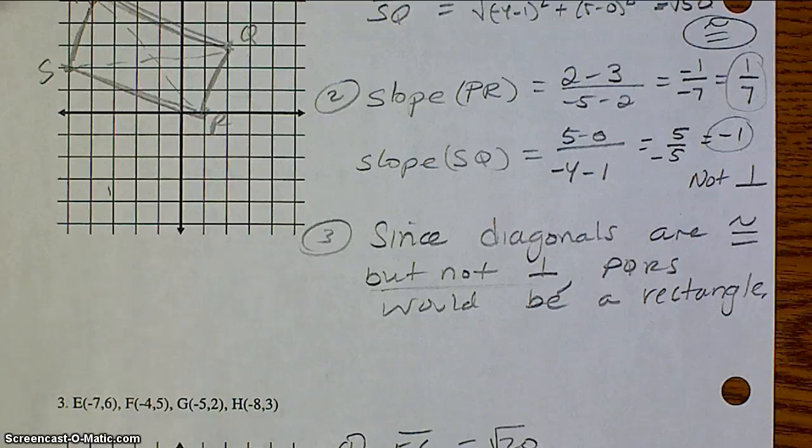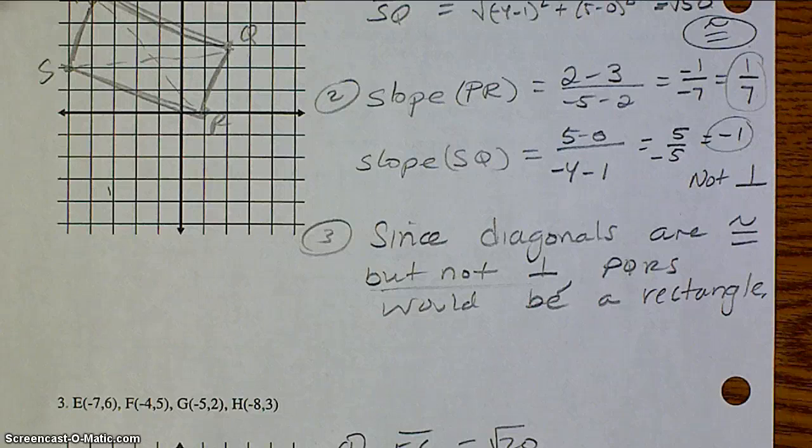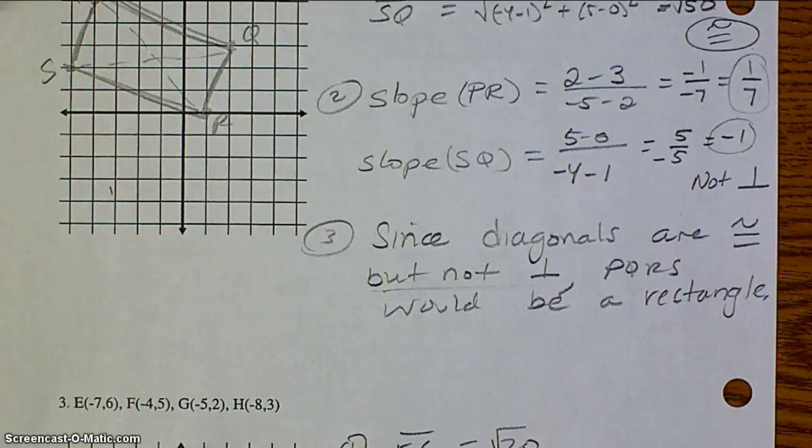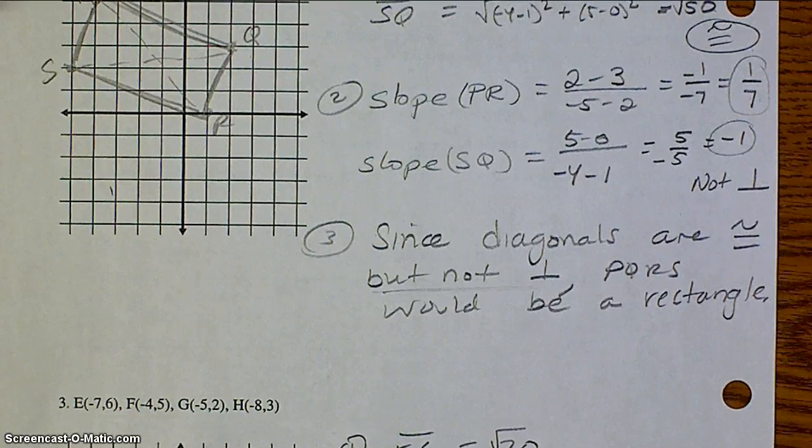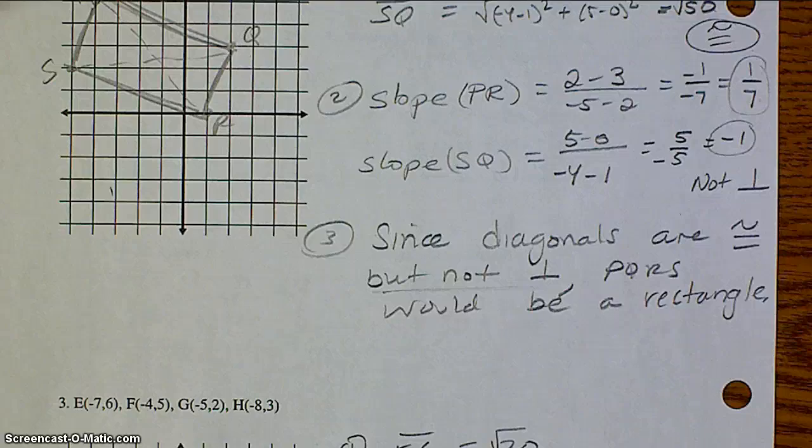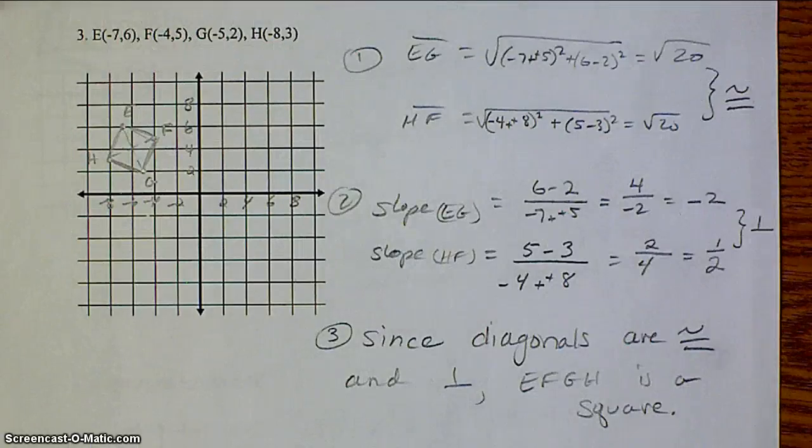Go ahead and try example number 3 on your own. When you're finished, resume the video and see if your answer matches mine. Question number 3. You can kind of tell by looking at the picture that it probably is going to be a square, but it's important to validate your hypothesis using work and geometry such as the distance formula and the slope.